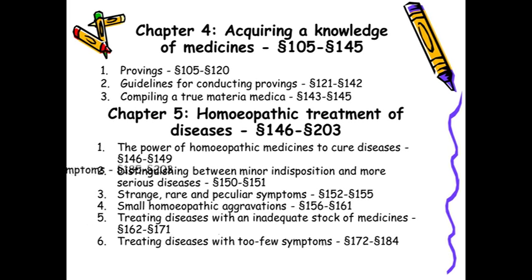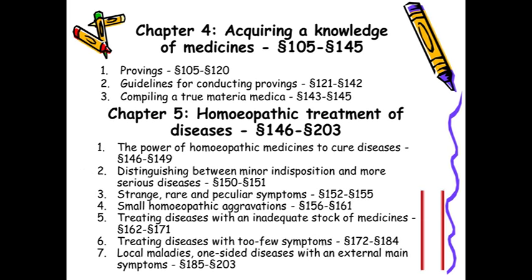Then treating diseases with an inadequate stock of medicines — when the number of medicines are less, it takes longer time. Treating diseases with too few symptoms, one-sided diseases, local maladies, one-sided diseases with an external main symptom — that is aphorism 185 to 203.